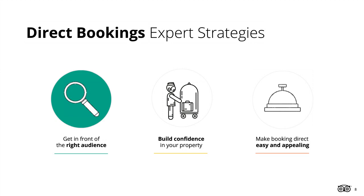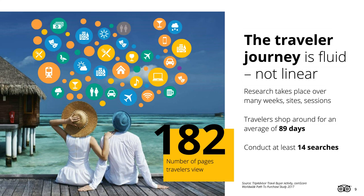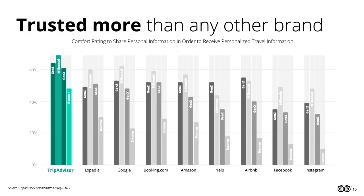Let's first talk about the right audience and how to get in front of it. The traveler journey is not linear, but rather a tangled web of visiting different sites, researching different options, and compiling data to make a final decision. In fact, travelers shop around for 89 days on average. During this time, they conduct at least 14 unique searches and view over 180 pages across various sites. Despite all the different resources they use, travelers trust TripAdvisor above them all, which is why having a presence on TripAdvisor is so important.